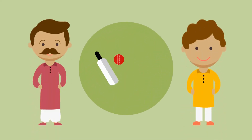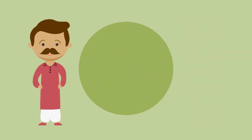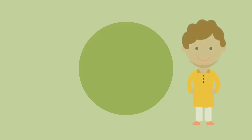Two friends, Faraz and Junaid, are playing cricket. Faraz bats first and scores 15 runs. Now it's Junaid's turn.